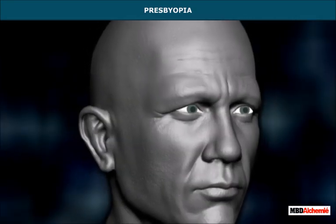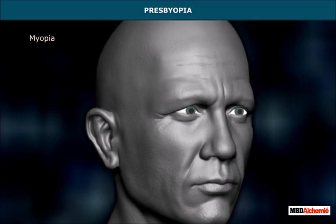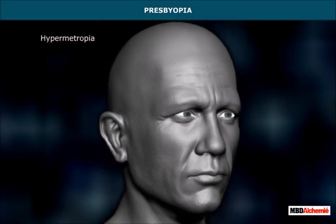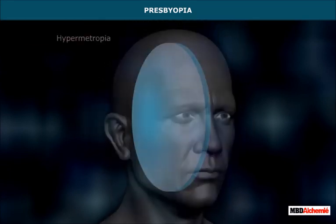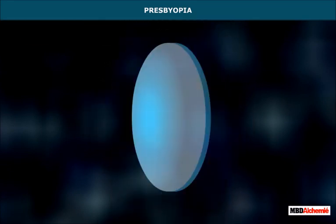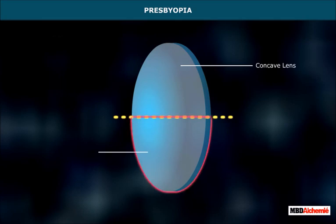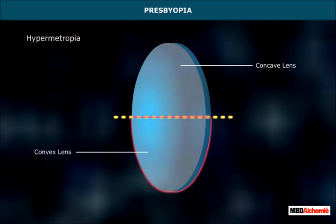If a person is suffering from both myopia and hypermetropia, the person needs bifocal lenses. In bifocal lenses, the upper part is a concave lens to correct myopia and the lower part is a convex lens to correct hypermetropia.